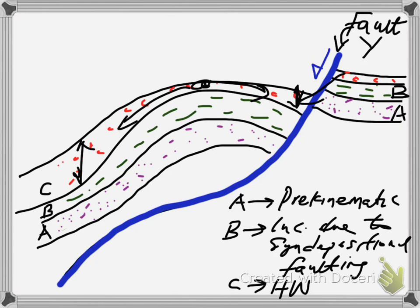So if I'm to put some time into this fault bend fold structure, one would say that it happened during the deposition of interval C. So if that interval C is Messinian, for example, or whatever age that interval is, that is when this fault bend fold structure was formed.